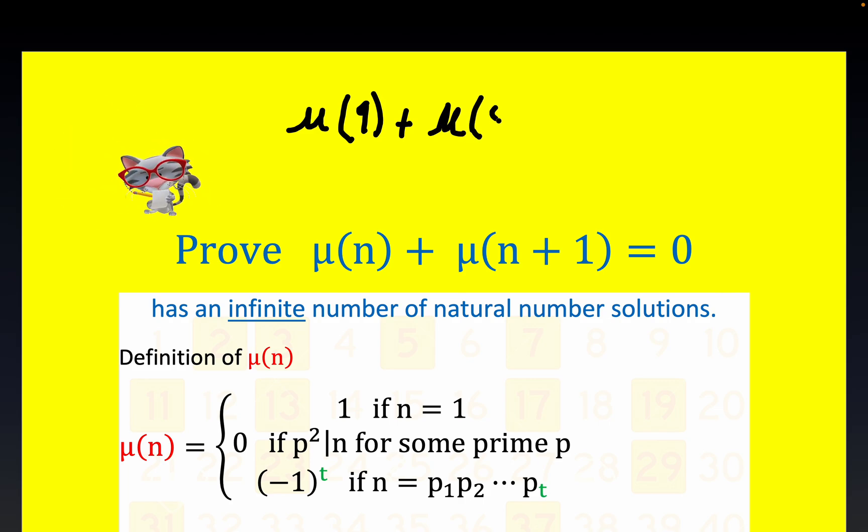I'm going to give you an example of what motivated the solution here. It's fairly elementary. We're supposed to show that μ(n) + μ(n+1) equals 0. See if you can find an infinite number of solutions to this, an infinite number of natural numbers that satisfy this.